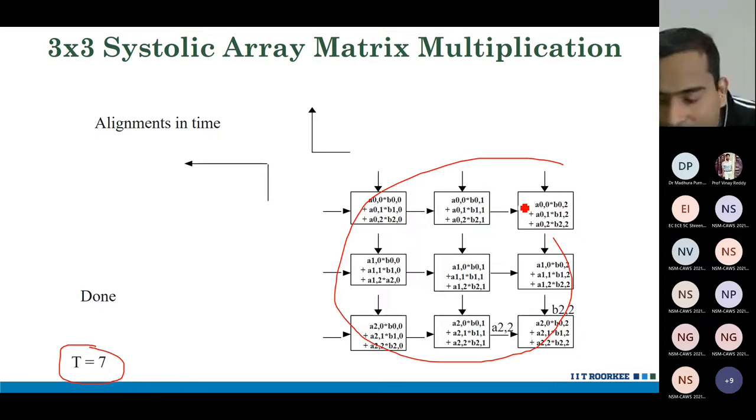If here, it was 3 cross 3 matrix, and we took 7 cycles. So, it's just a linear time. If you see the equation, it is 3n minus 2. Here, n equals to 3. So, 3 into 3 minus 2 is 7. The number of cycles taken.